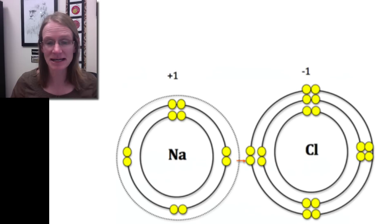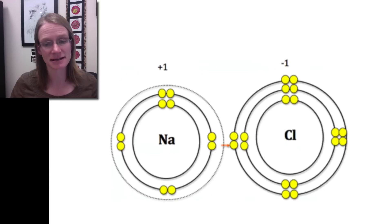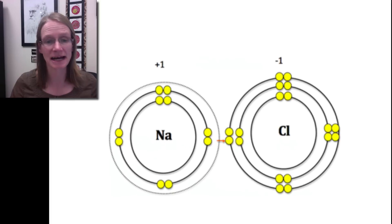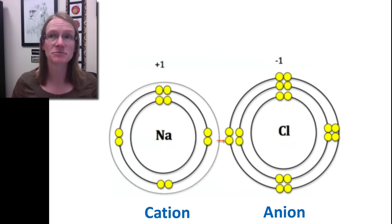But what's actually happened in this donation process is these have become what are called ions. And so ions are charged atoms. That's all they are. And so specifically we have sodium which actually becomes a cation and it's positively charged. And of course it's positively charged because those electrons are negative. And so if it gets rid of one electron, one electrical charge, then it actually becomes positive.